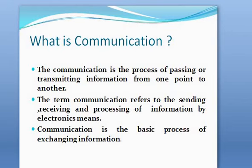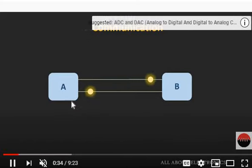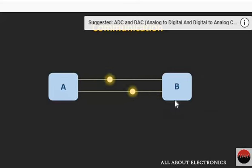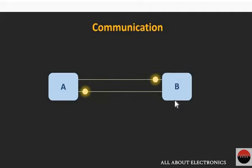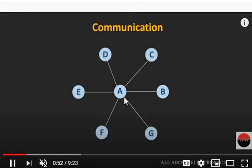Here is an example of communication. There are two points, A and B. It may be two persons or two electronic devices or two gadgets, etc. The information is transferred between these two points. This communication channel may be wired or wireless. Communication may be point-to-point or point-to-multipoint.